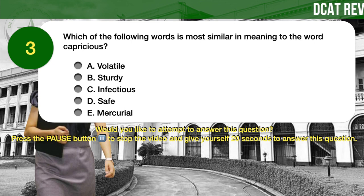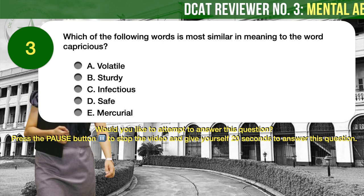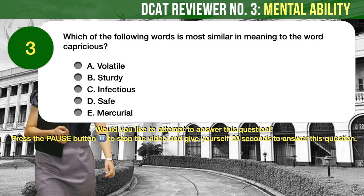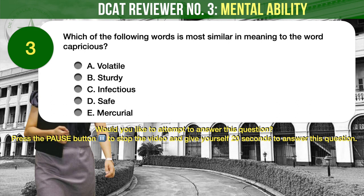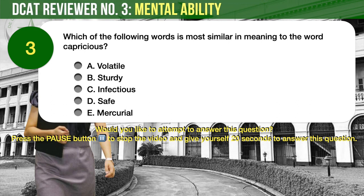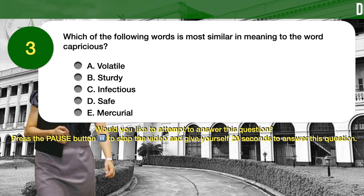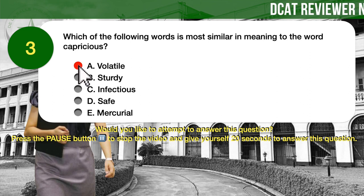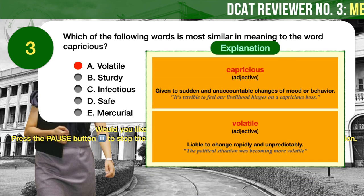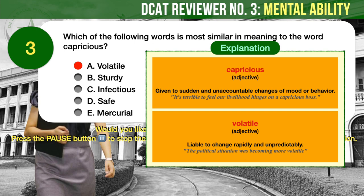Question number 3. Which of the following words is most similar in meaning to the word capricious? A: Volatile. B: Sturdy. C: Infectious. D: Safe. E: Mercurial. The correct answer is A, volatile. Capricious means a sudden change in mood or behavior, which is closest in meaning to the word volatile.